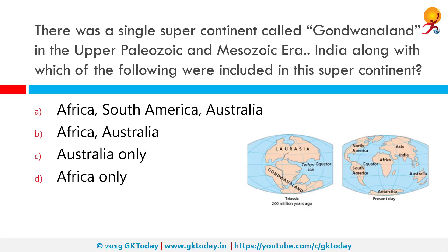There was a single supercontinent called Gondwana Land in the Upper Paleolithic and Mesozoic era. India, along with which of the following were included in this supercontinent? Looking at the image, you can see what it used to be previously and what the present-day continents are. The correct answer is Africa, South America, and Australia.